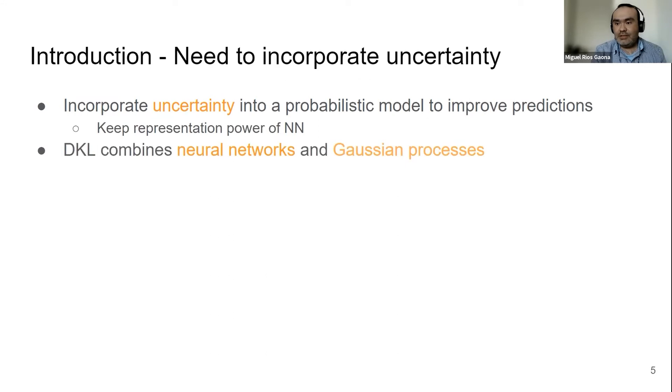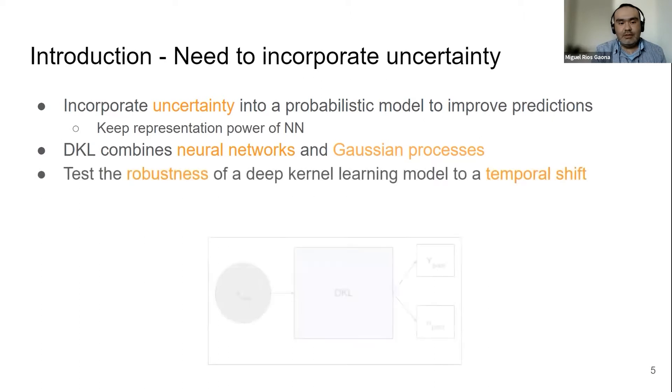So we choose deep kernel learning, the framework that combines neural networks and Gaussian processes. And we test the robustness of deep kernel learning to temporal shift. Here we can see that deep kernel learning, apart from making a prediction, is going to give you a measure of confidence, the standard deviation.